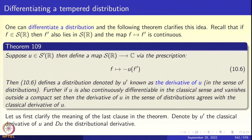One can differentiate a distribution and the following theorem clarifies this notion. Recall that if F is in the Schwarz class S of R, then F prime is also in the Schwarz class, and we proved last time that F going to F prime — the derivative map — is a continuous operator. Now suppose U is a tempered distribution; we create a new tempered distribution by formula 10.6. The prescription is: F maps to U applied to minus F prime. We put a minus sign here — why this minus sign comes in, we will see later.